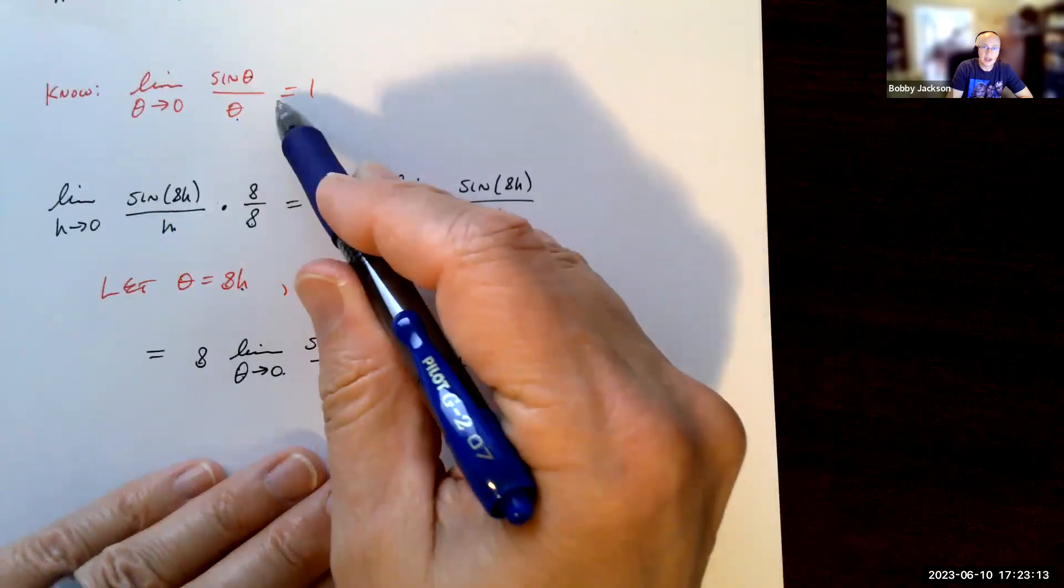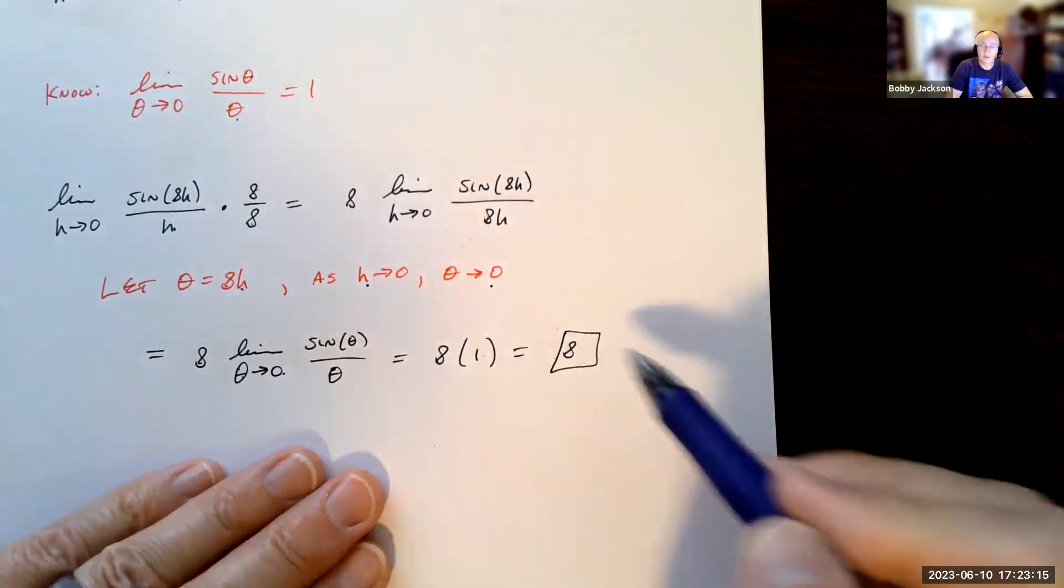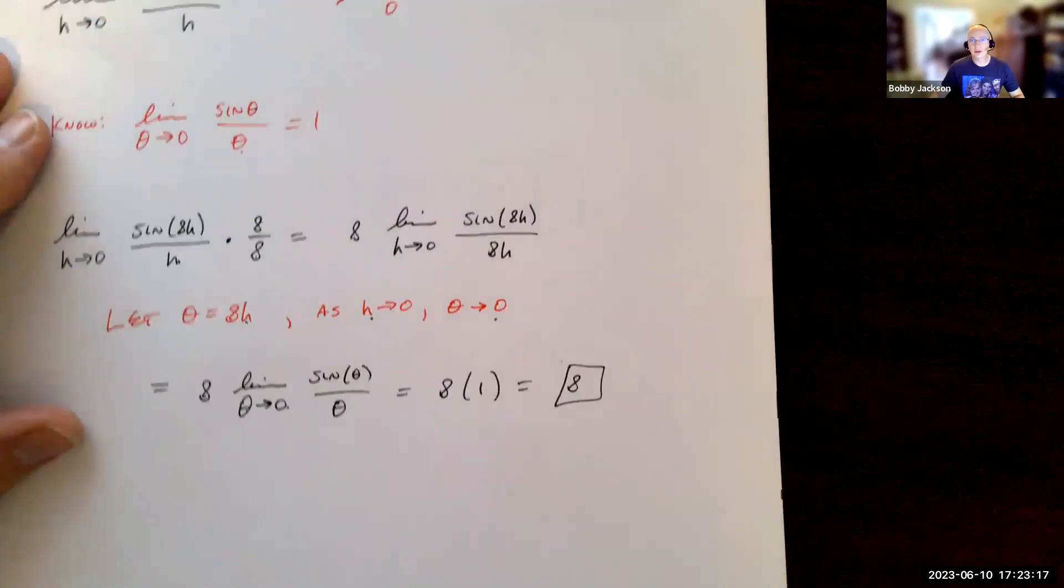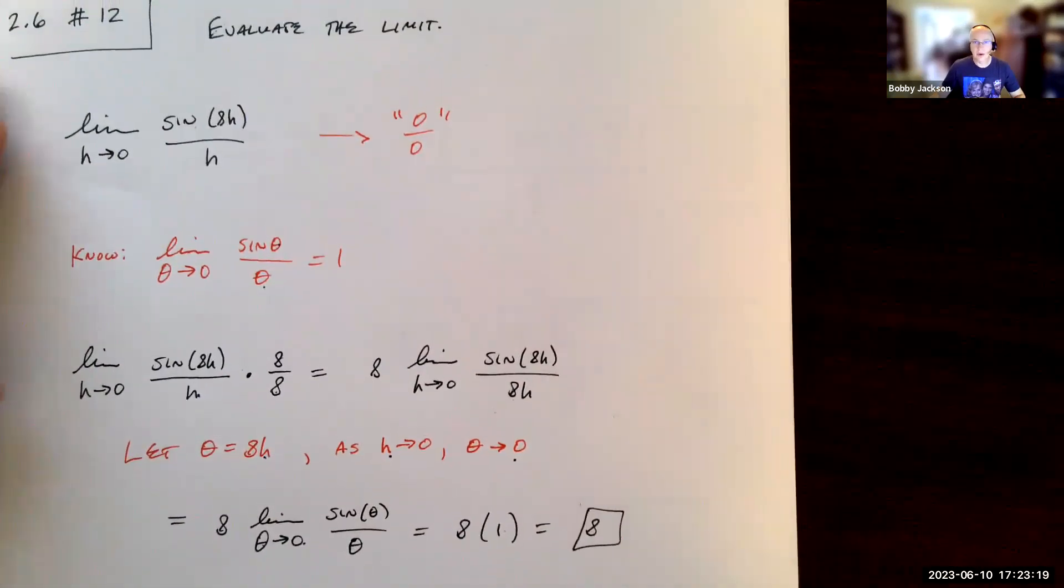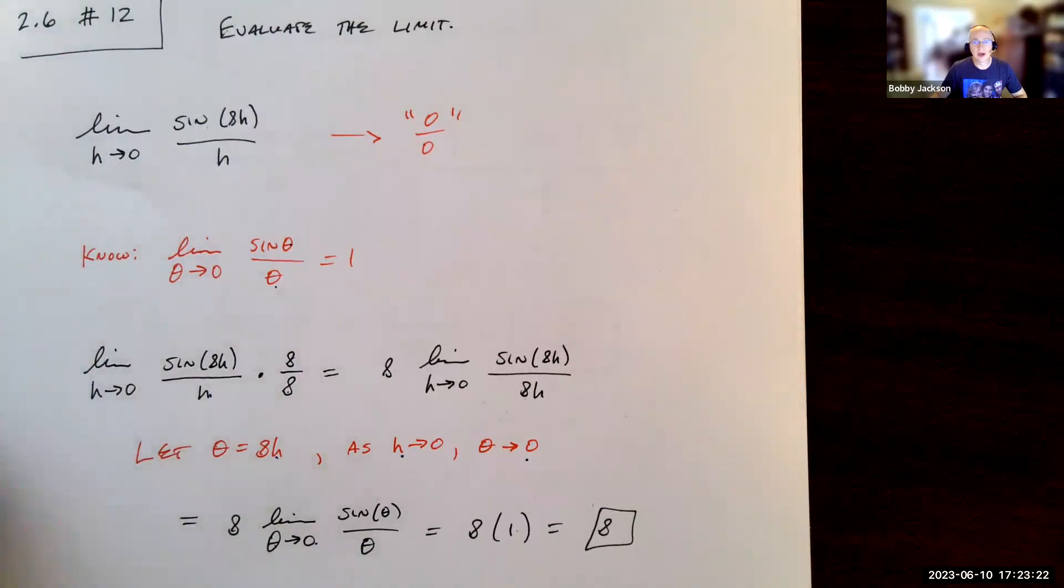And this is equal to 1, 8 times 1 being 8, and so the limit is 8. Okay, so this is very simple, but students do have a little trouble with these type of limits. Again, if you have questions about them, please let me know.